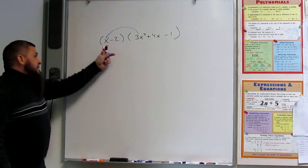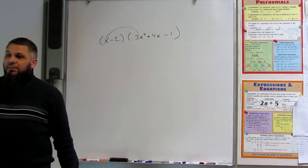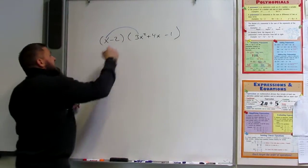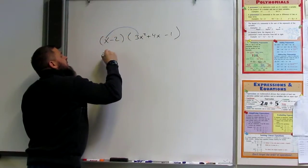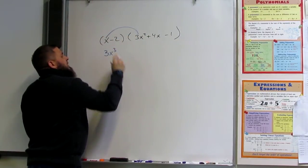x times 3x². 3x to the fourth? 3x to the third. Third. Add the exponents. 3x to the third.